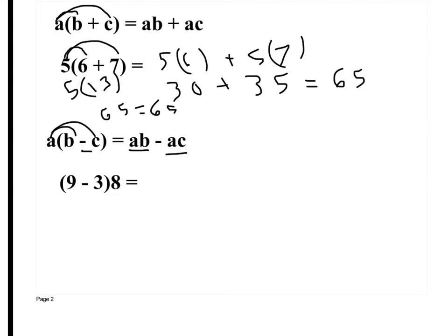Remember, we can change the order of multiplication and not change your answer. So we just distribute the 8 out. So 9 times 8 minus 3 times 8, or 8 times 9 minus 8 times 3. It doesn't matter. 9 times 8 is 72, 3 times 8 is 24. Work those out. What's 72 minus 24? 48.